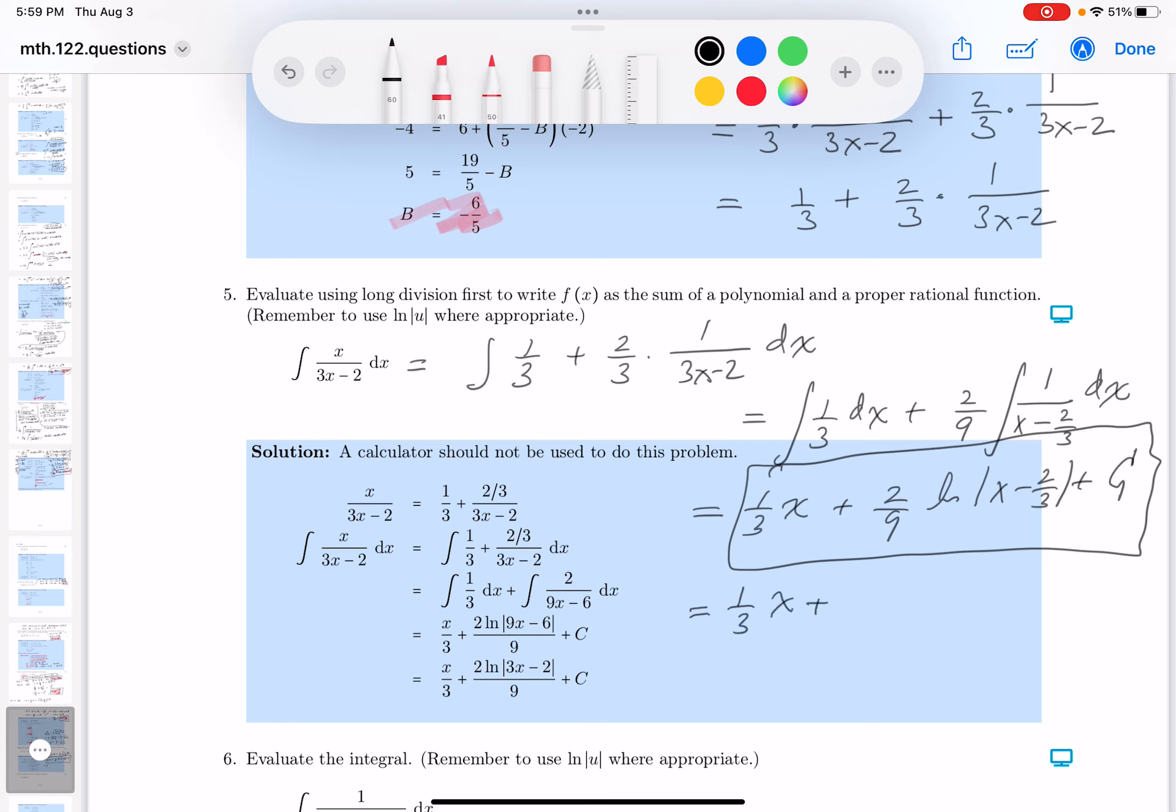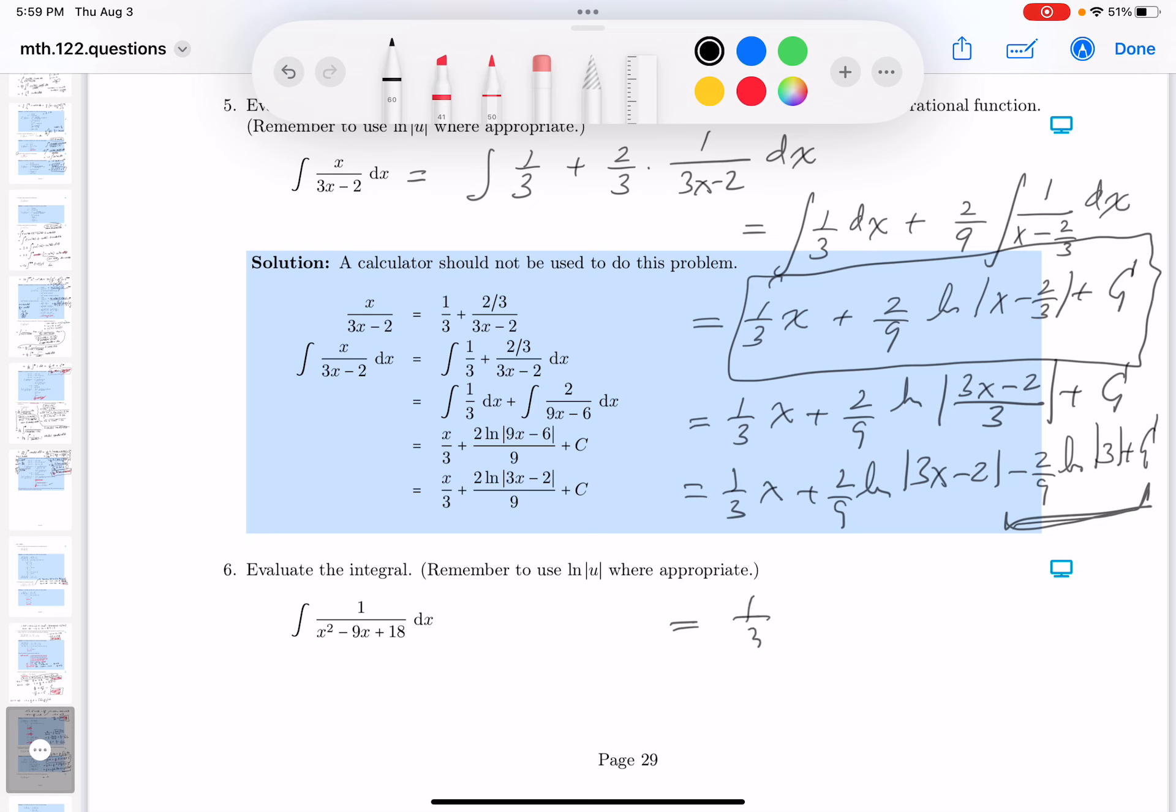So one-third x plus two-ninths ln absolute value 3x minus 2 over 3. They didn't get that answer either. Let's keep going. One-third x plus two-ninths ln 3x minus 2, the absolute value of it. And then what I would say is minus two-ninths natural log absolute value of 3 plus c. I hope you realize that this over here is a constant number. Whatever c is, when I combine it together, it's a constant number. So what could you write down instead? One-third x plus two-ninths ln absolute value of 3x minus 2.